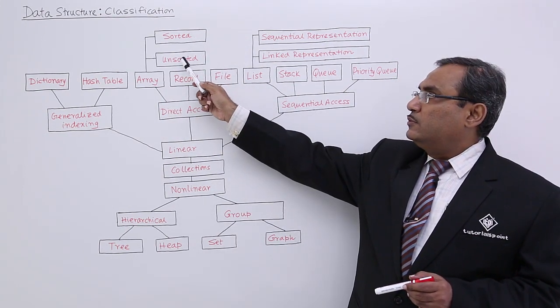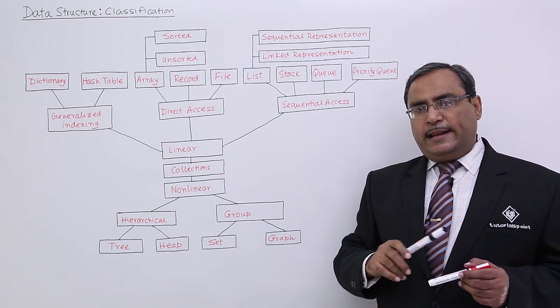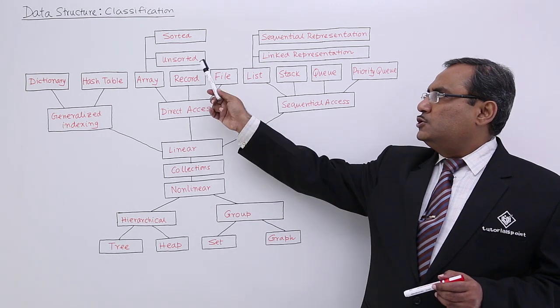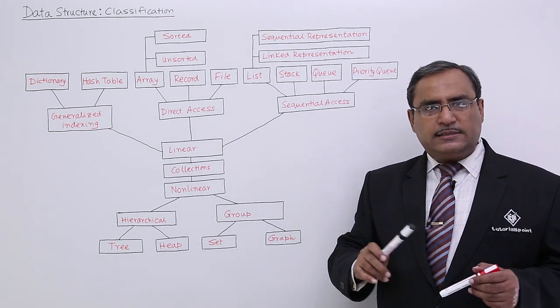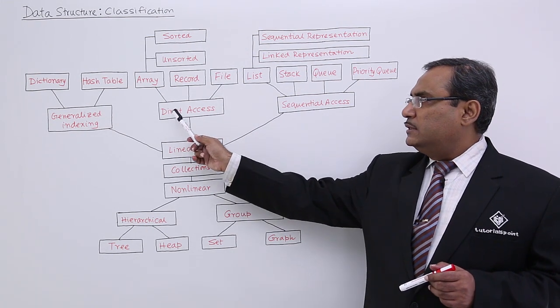Arrays can be of two types: sorted and unsorted. Sorted means data items are arranged in ascending or descending order, and unsorted means they're arranged in some random order. We also have record files. These are direct access structures.